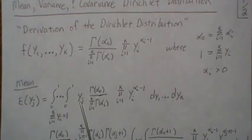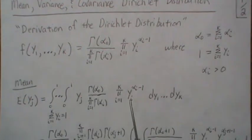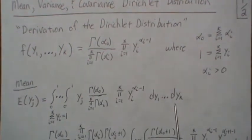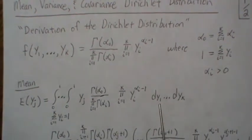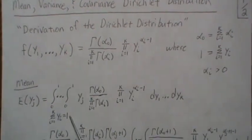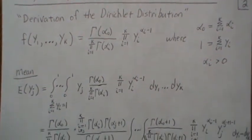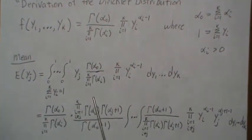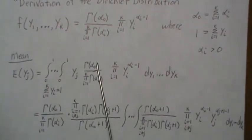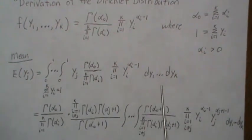So the mean is you stick in yj times the density and integrate it over all possible values, so that y1 through yk go from 0 to 1 with the restriction that they sum to 1. This is the region that we're integrating over. What we do here is we take out anything that doesn't have a yi.